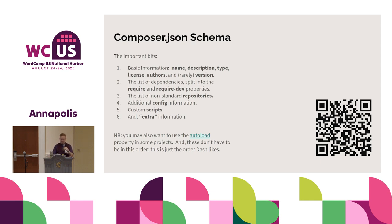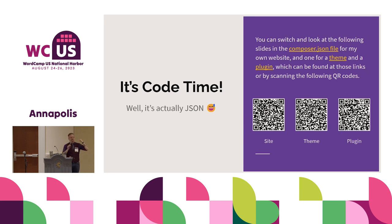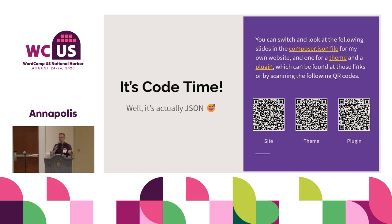It's code time — well, JSON time. The three QR codes on the screen will lead you to the composer.json for the site that was just on the screen in a screenshot, the composer.json for a theme, and one for a plugin. They will also be on the slides so we can talk about them here today. They're all public repos in GitHub, so you can look at them and take a look at what's going on there.